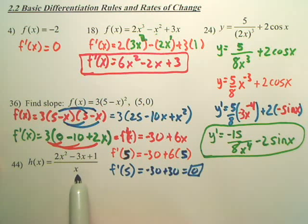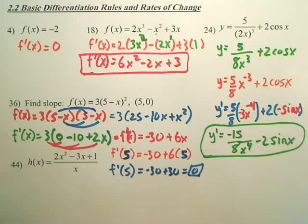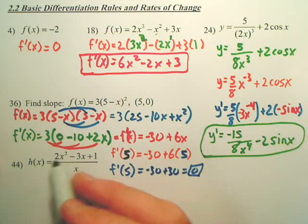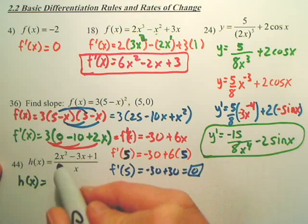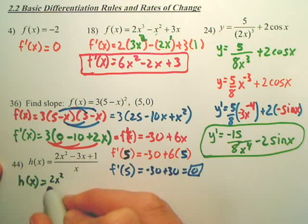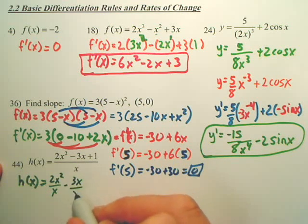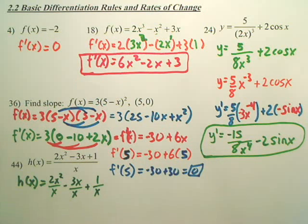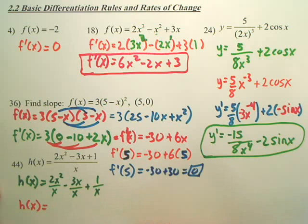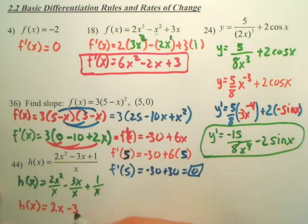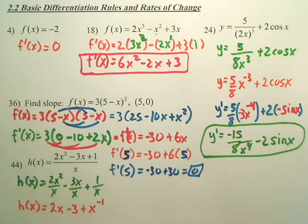Problem 44: take the simple derivative. We don't have a derivative formula for a fraction yet, so use this common trick — divide x into each term. 2x² over x is 2x, negative 3x over x is negative 3, and 1 over x becomes x to the negative first power, since we never leave x in the denominator.